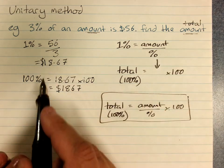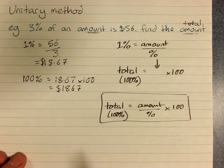So either this method, 2 steps, or this method where it's all in 1, is fine, but that's your unitary method.